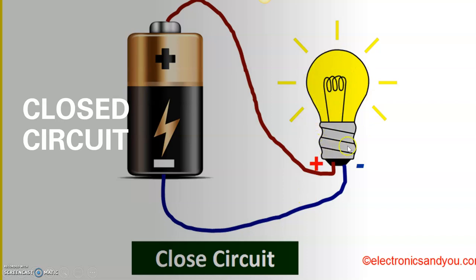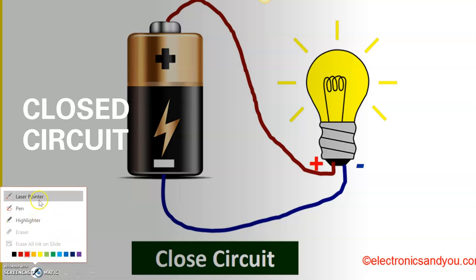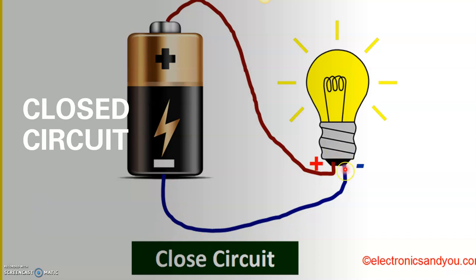You can assume the bulb represents any electrical appliance — a solar device or anything similar. Whenever electrons flow through the bulb it generates electricity as electrons run from one end to the other. The path from the battery to the bulb is called the hot wire, and the path from the bulb back to the battery is called the neutral wire. The hot wire sends electrons to the appliance and the neutral wire receives them back.